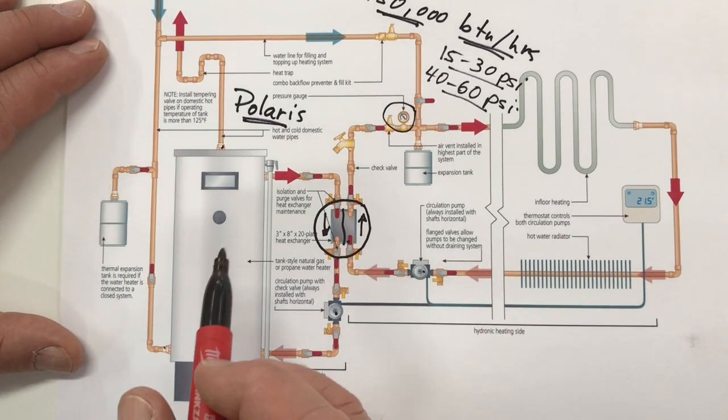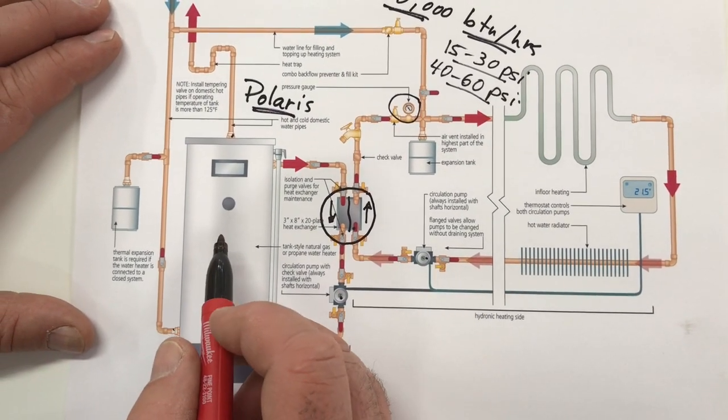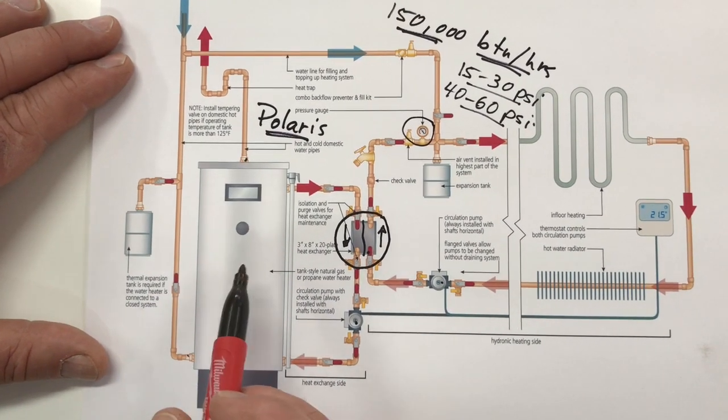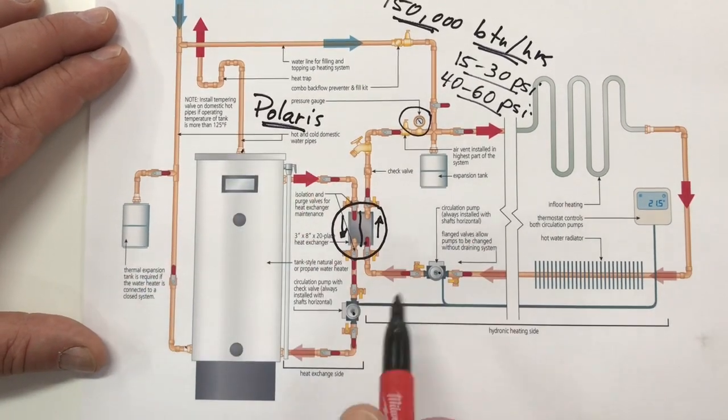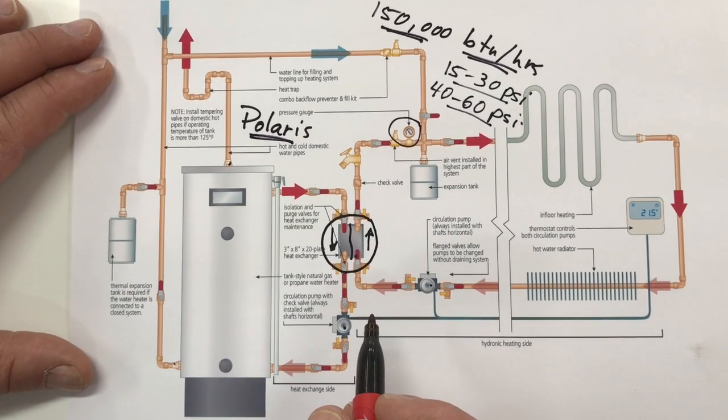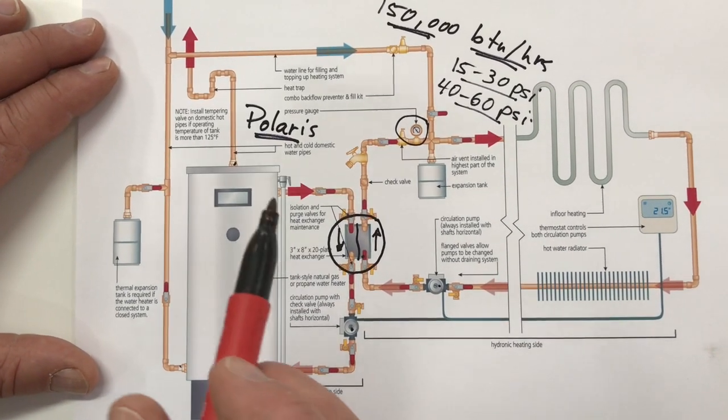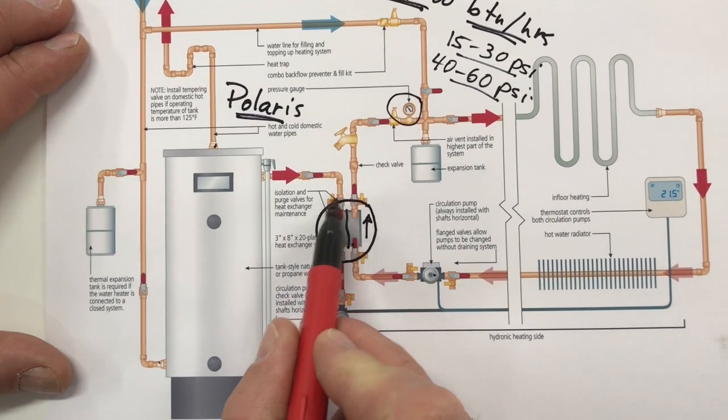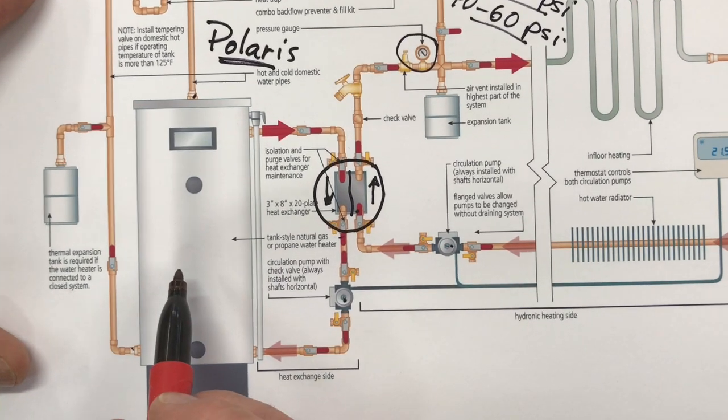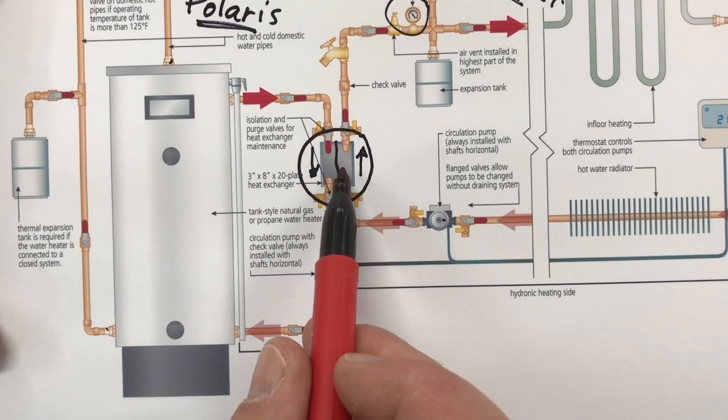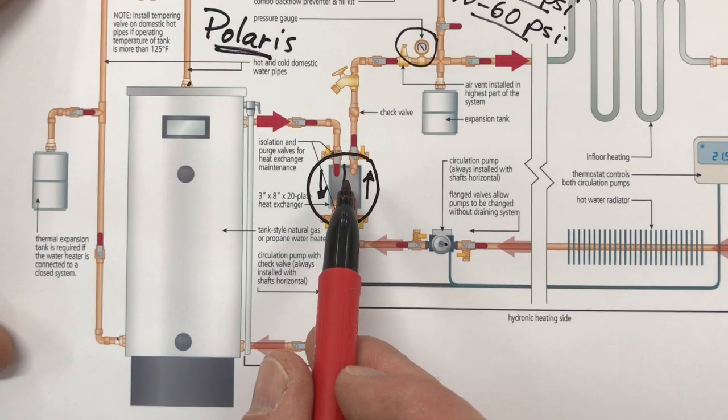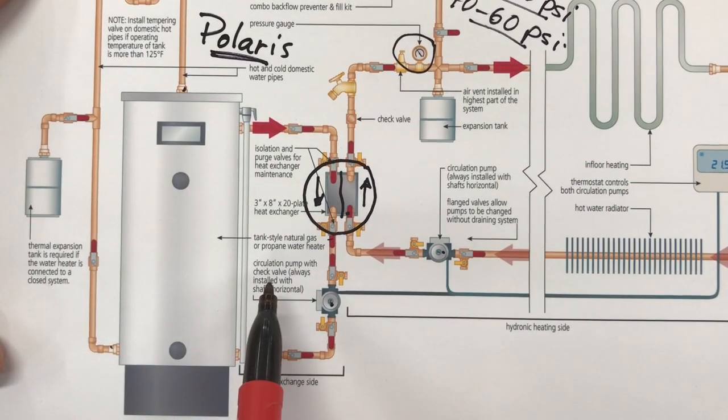Now another reason you'd want to use a tank style heater is because it's just simpler. You've got one appliance and it'll serve you all year round for domestic hot water, tapping in as needed during the heating season for heating. If you go with the simple installation and you eliminate the need for a heat exchanger, maintenance is also lower too because with any kind of a boiler you've got a built-in heat exchanger that will form scale on the domestic side of the system.